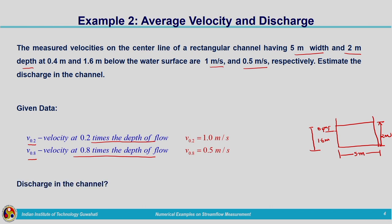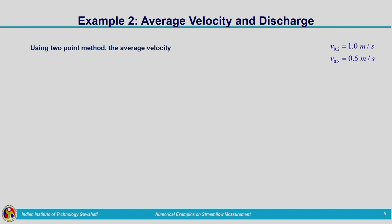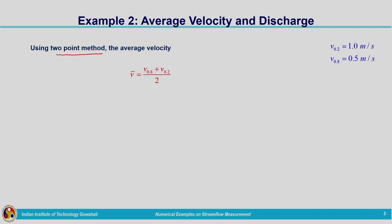We need to compute the discharge in the channel. Using the two-point method — preferred for deep streams — we compute average velocity. For shallow streams, velocity is measured at a single depth of 0.6 times the channel depth. Here, velocities at 0.2y and 0.8y are given, so we use the two-point method. Average velocity V = (v₀.₈ + v₀.₂) / 2, which comes out to be 0.75 meters per second.